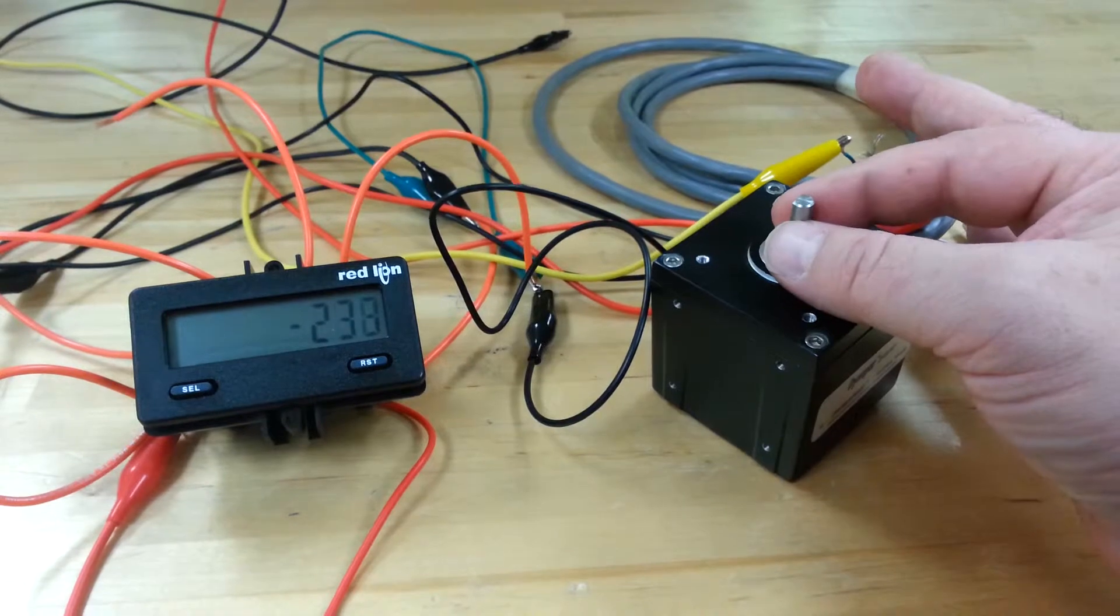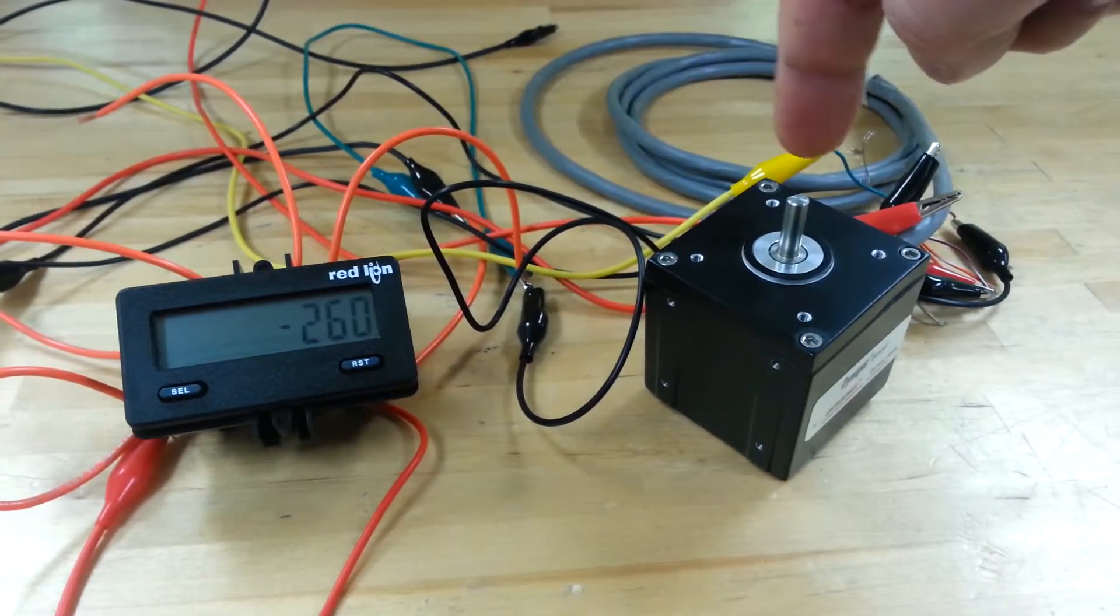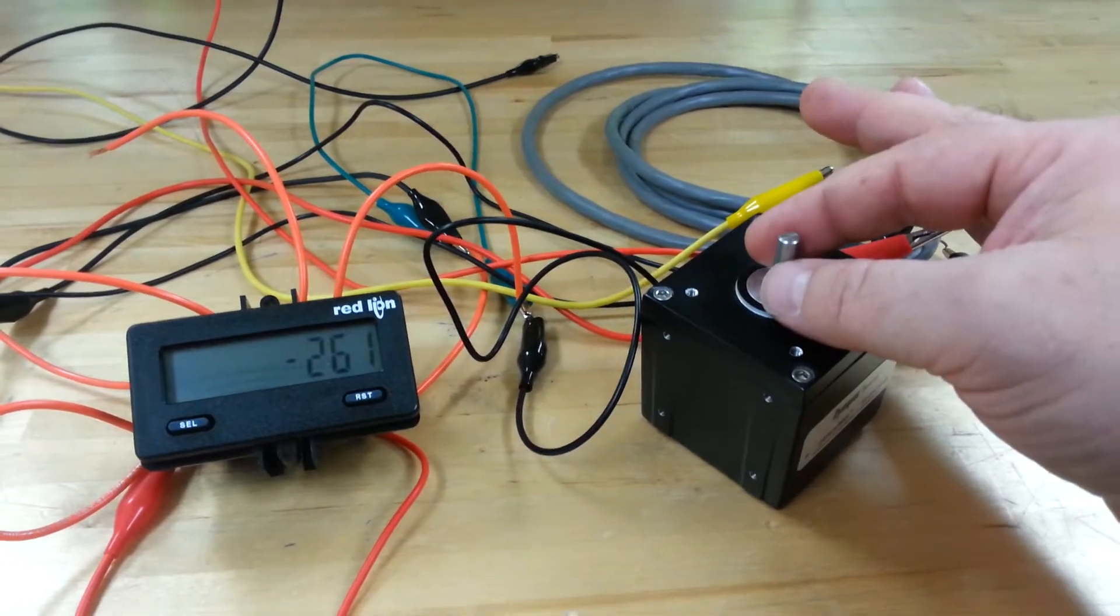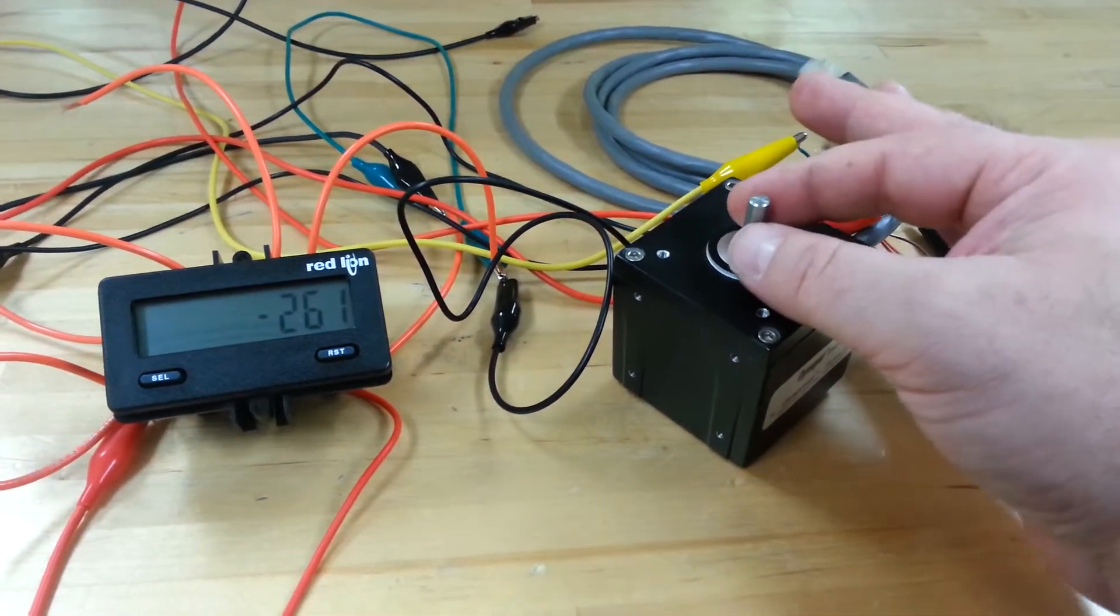These signals can be used to tell you rotation rate, rotation direction, or position, let's say you're using it with a robotic application.